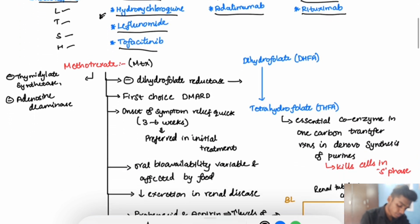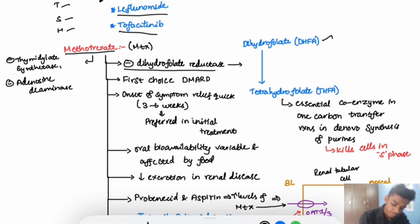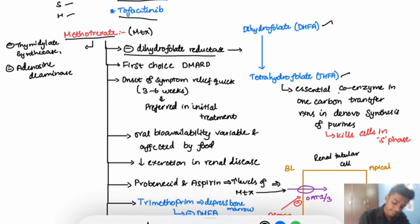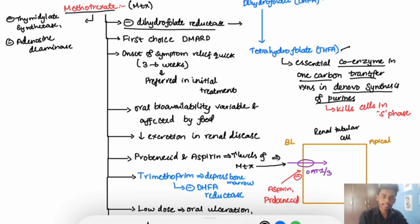Methotrexate is an inhibitor of dihydrofolate reductase, the enzyme which converts dihydrofolate into tetrahydrofolate. Tetrahydrofolate is an essential coenzyme in one-carbon transfer reactions in the de novo synthesis of purines. So there is decreased purine synthesis, leading to decreased DNA replication and decreased cell proliferation.